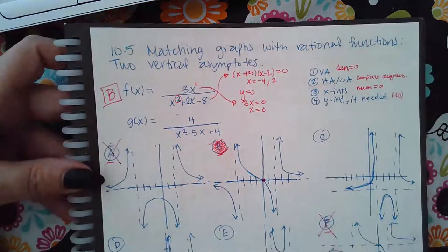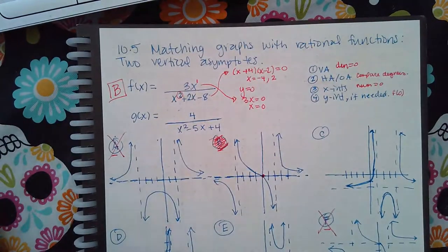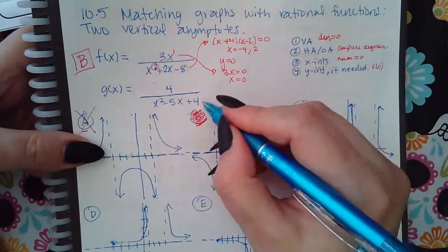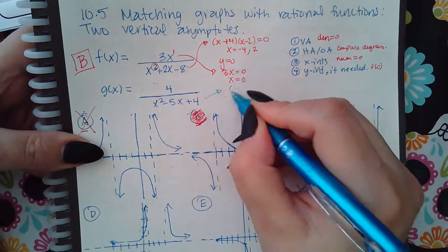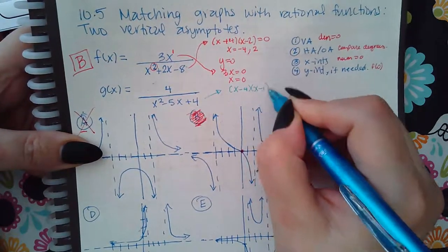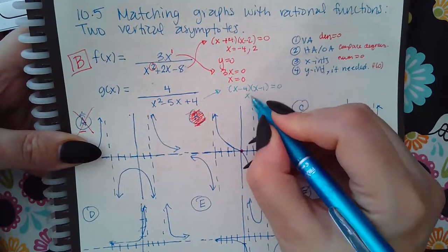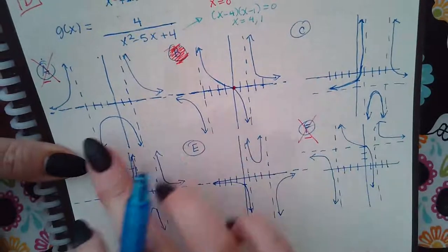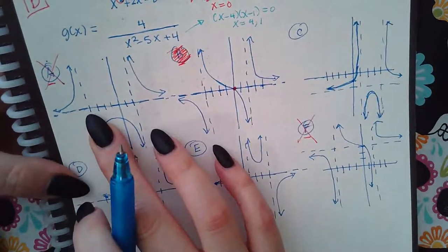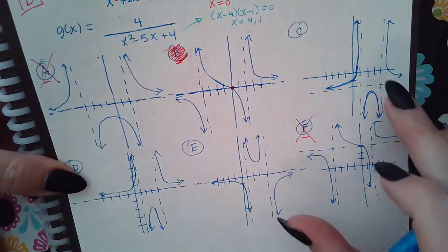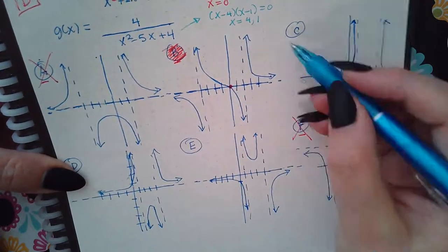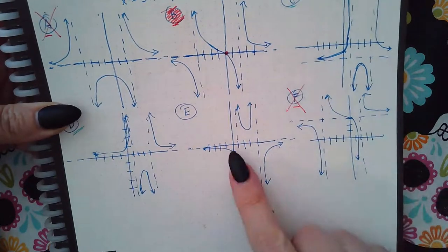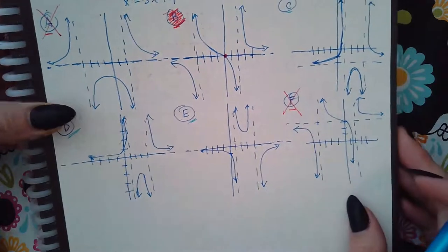Now let's look at function g. I'll do the same thing again — look at the vertical asymptotes first. Setting x minus four and x minus one equal to zero gives x equals four and one. Graph B is already taken. Looking for asymptotes at one and positive four: graph C could be it, graph D could be it, and graph E could be it. So I've narrowed it down to those three.